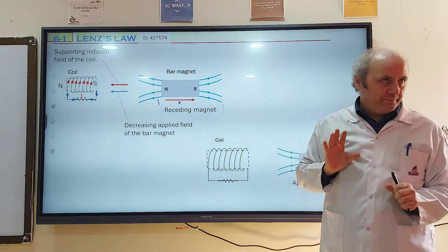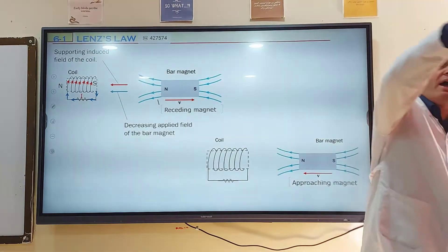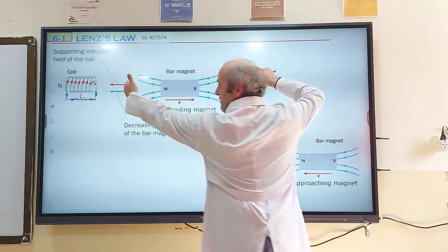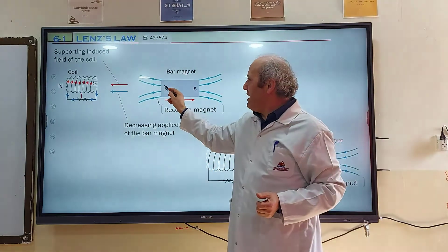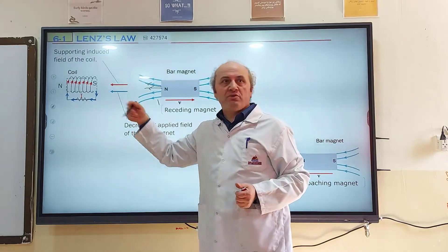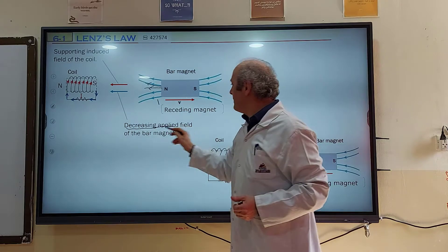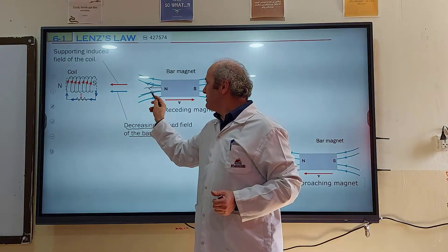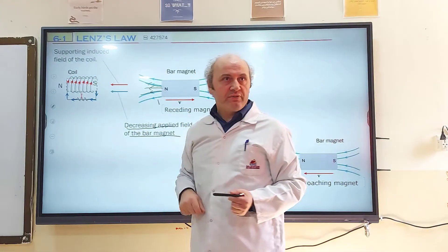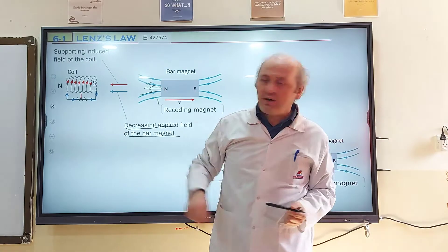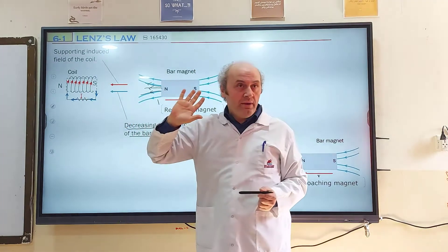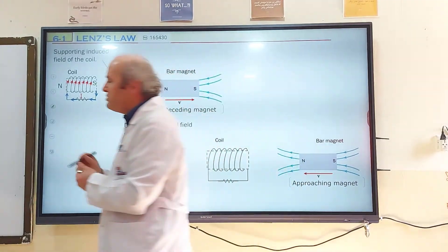Now an example: a magnet is being pulled away. When I pull it away, the magnetic field in this region is decreasing, because the magnet is moving away. You know that magnetic field lines leave from the magnet to the left. The blue arrow represents the decreasing applied field of the bar magnet. If it is decreasing, this coil's magnetic field must support it — so the blue and red magnetic fields must be in the same direction, according to Lenz's law.